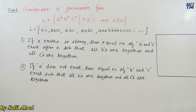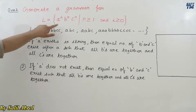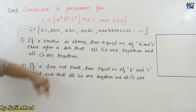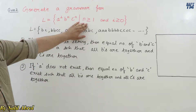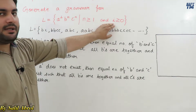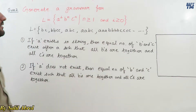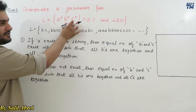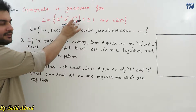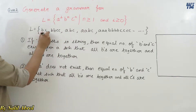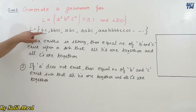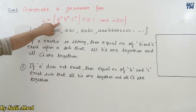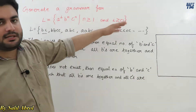This is the second question: generate a grammar for the language a^i b^n c^n where n ≥ 1 and i ≥ 0. That means there must be at least 1 b and at least 1 c. The 'a' can be present or absent because i can be 0.